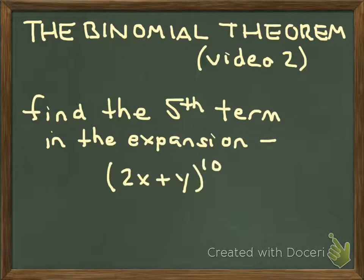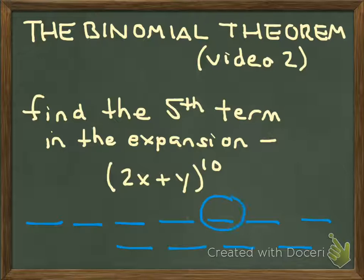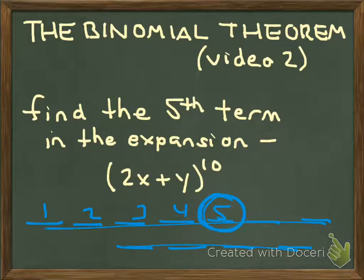Now we know that if we were to expand this, we would end up with something that would have 11 terms. I could figure out all 11 terms, write them all out and simplify them, and then find the fifth term in the list. But that would be time-consuming. So we're looking to leverage the patterns and see if there's a way that we can figure out this fifth term without having to find all 11 terms. And there is a way to do this.